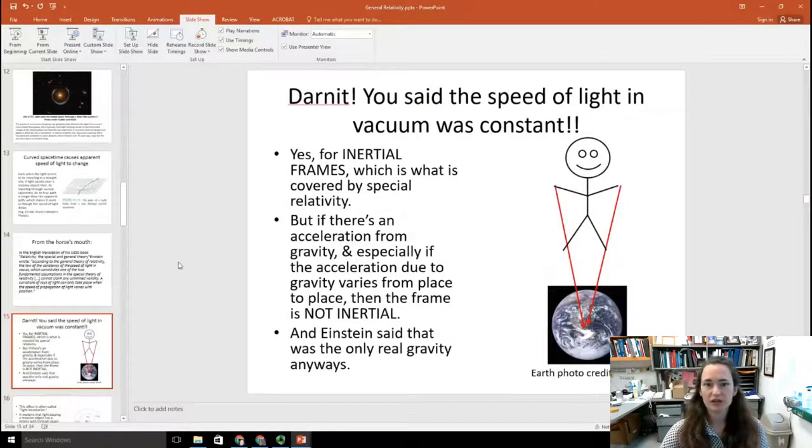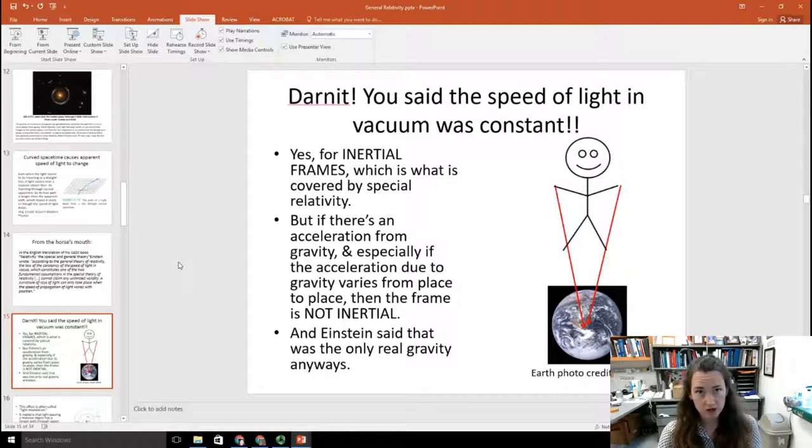Well, you might be thinking at this point, darn it! You said the speed of light in a vacuum was constant in modern physics one. And true, for inertial frames that's absolutely true. And inertial frames are what's covered by special relativity. But what is an inertial frame? An inertial frame is a frame which is not accelerating. So if there's an acceleration due to gravity from a large gravitational object, and especially if the acceleration due to gravity is going to vary from place to place, as it would if you have a very massive object, then that is a non-inertial reference frame. And Einstein said, well, that's the only real gravity anyways when you have a tidal gravity or an asymmetry. So there you go.